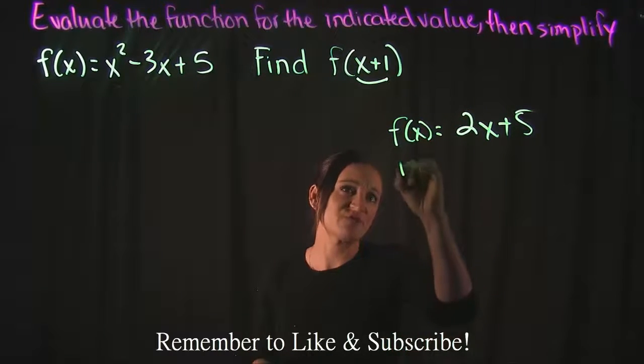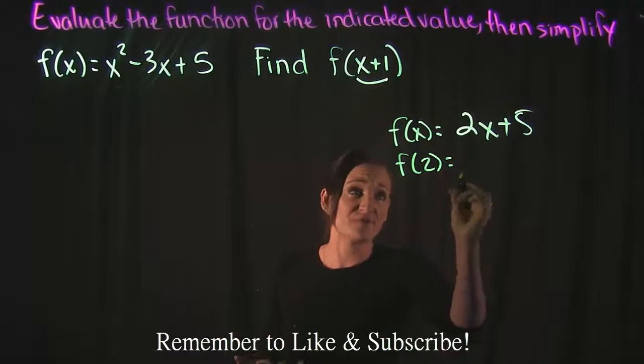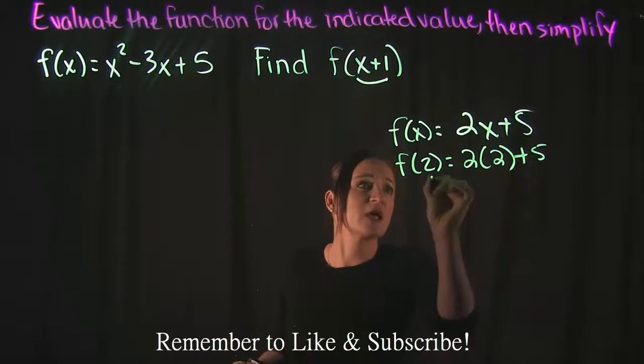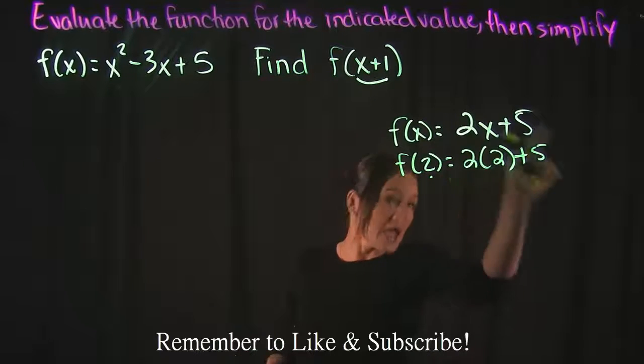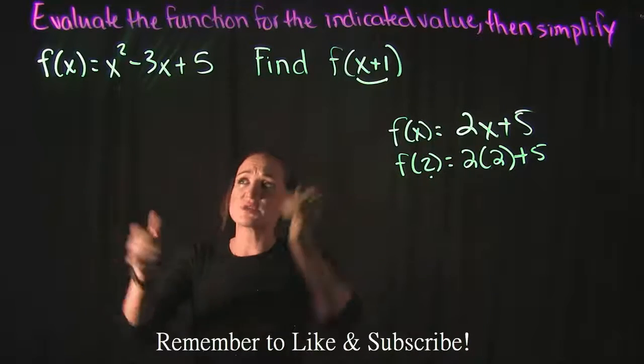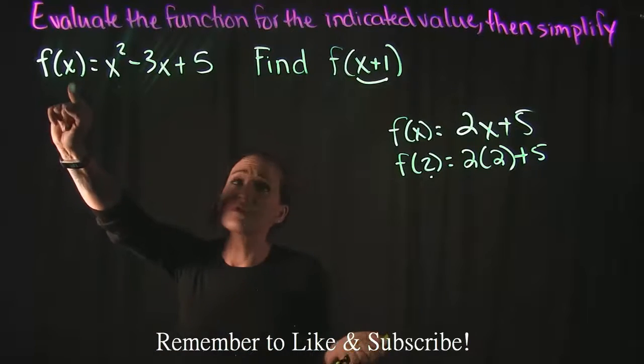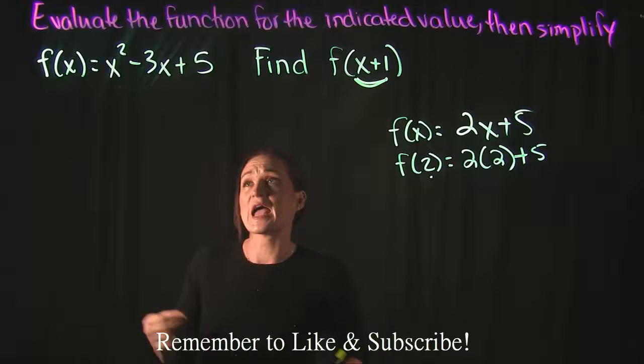...that's all it's asking you to do is plug in 2 for x and then simplify. So that's exactly what they're asking us to do here, except instead of plugging in a number for x we're going to be plugging in x plus 1. So for every x we're plugging in x plus 1 and then simplifying.